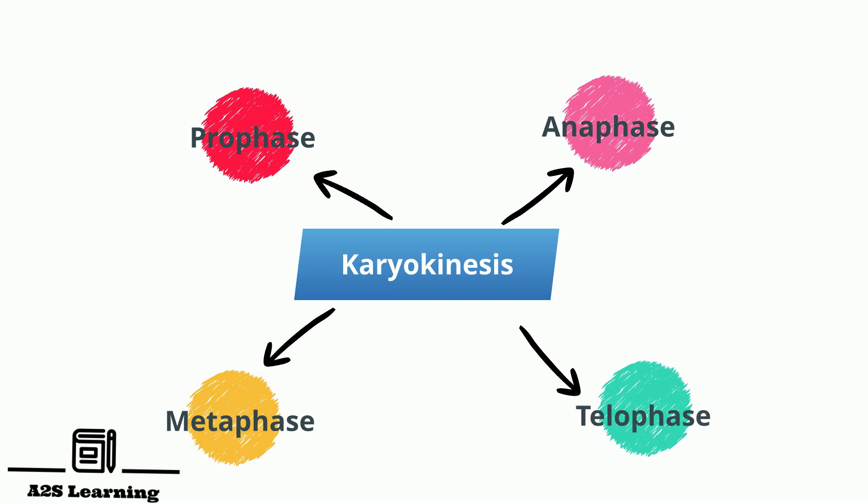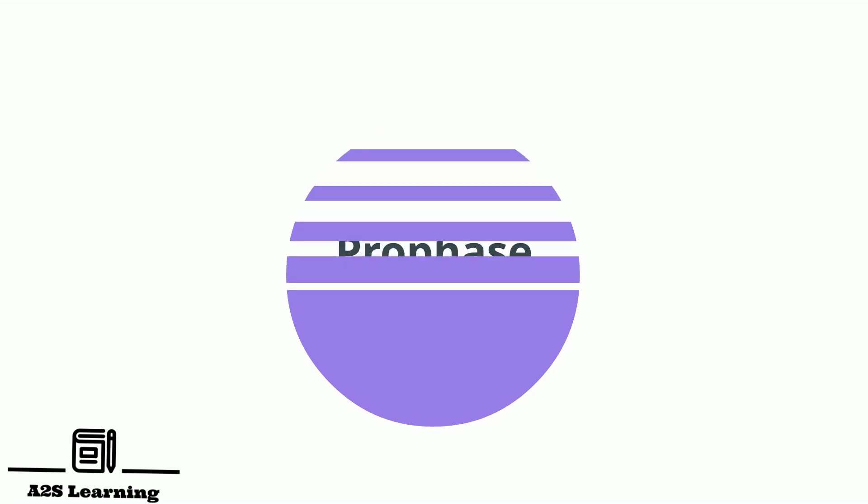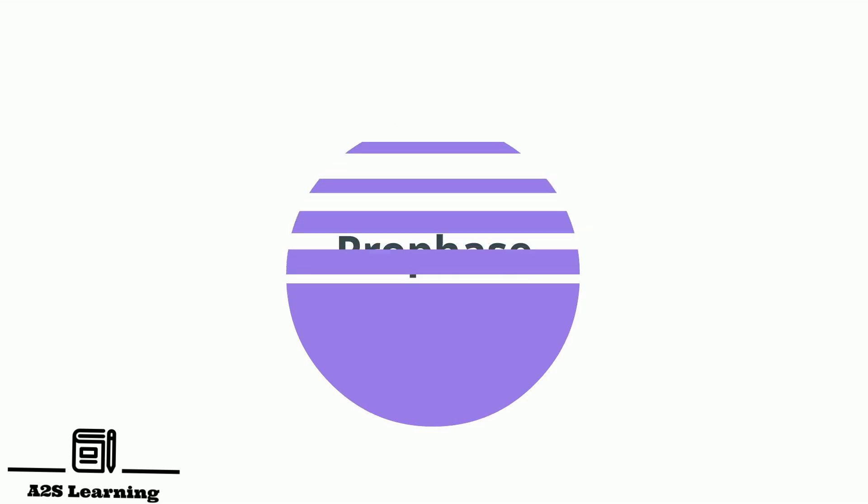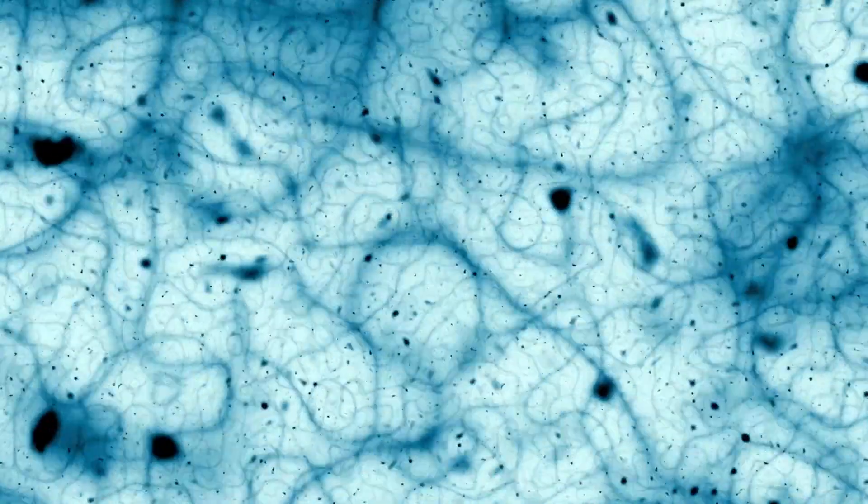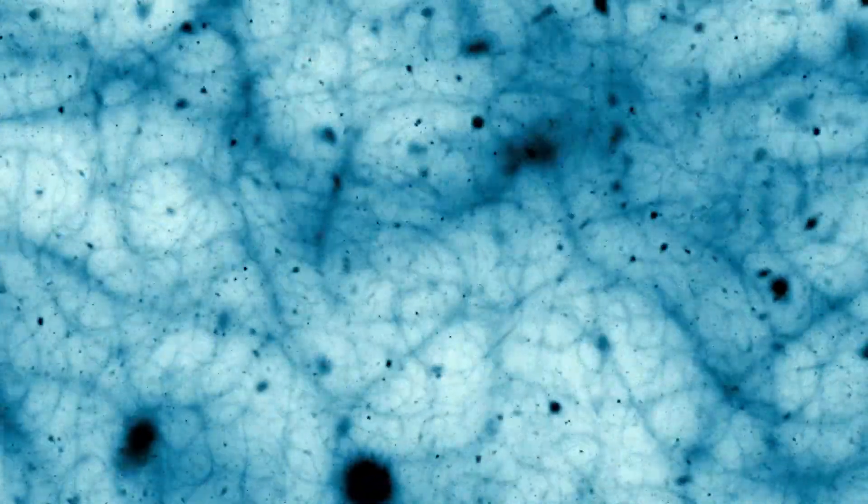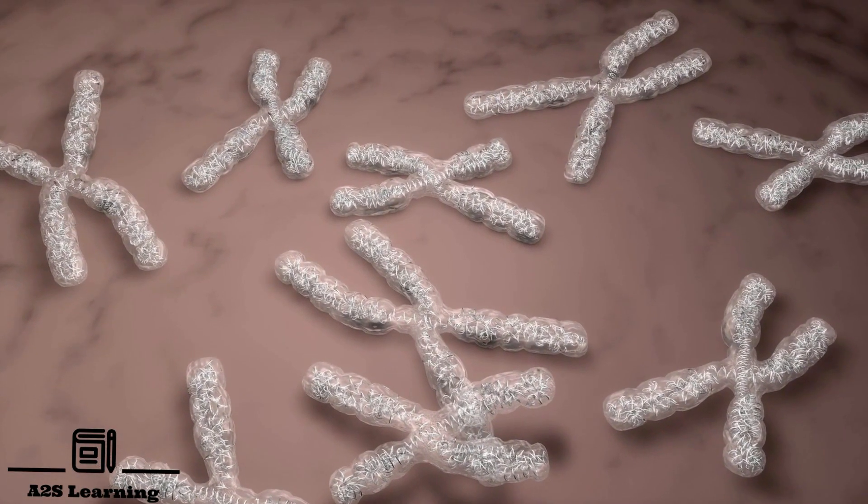Prophase, which is the first stage of karyokinesis of mitosis, follows the S and G2 phases of interphase. In the S and G2 phases, the new DNA molecules formed are not distinct but intertwined which are called chromatin fibers. So in prophase, the chromatin fibers condense and shorten into chromosomes.